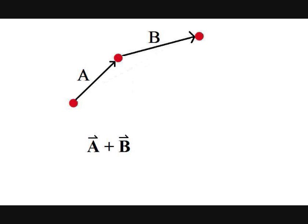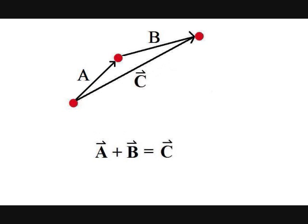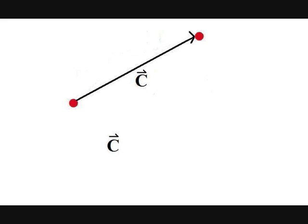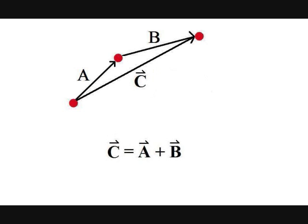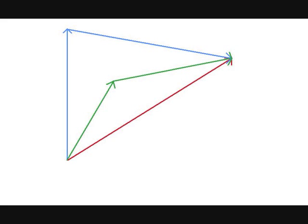First I need to show you what components of a vector are. Remember in the last video I showed you that the addition of any two vectors produces one resultant vector. Similarly, you can think of it in the opposite direction — that any vector can be represented by the addition of two vectors. So this red vector can also be represented by these two blue vectors, or these two green vectors, or even these two black vectors. We can represent any one vector equally well by any two other vectors that sum up to that vector.